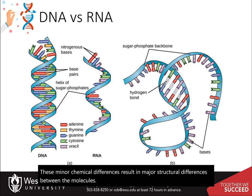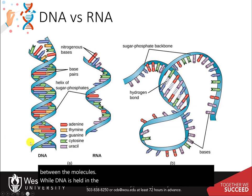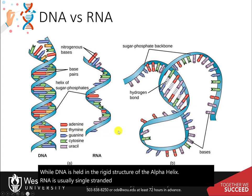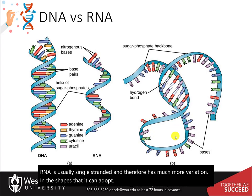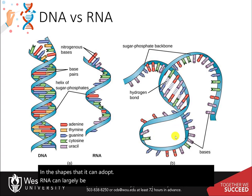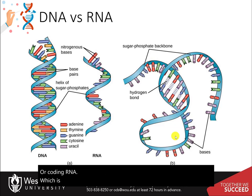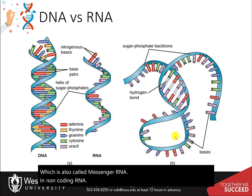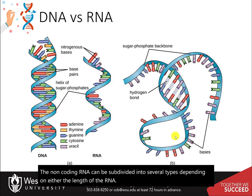While DNA is held in the rigid structure of the alpha helix, RNA is usually single-stranded and therefore has much more variation in the shapes that it can adopt. RNA can largely be divided into two types: one that carries the code for making proteins, or coding RNA, also called messenger RNA, and non-coding RNA. Non-coding RNA can be subdivided into several types depending on either the length of the RNA or on the function.